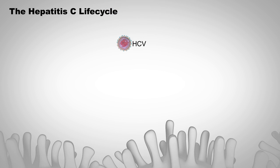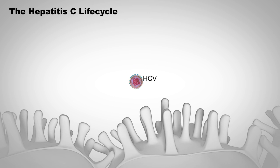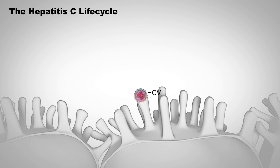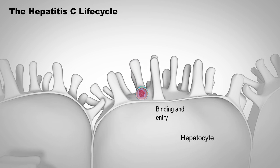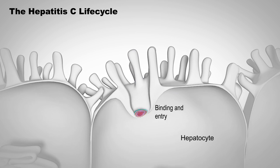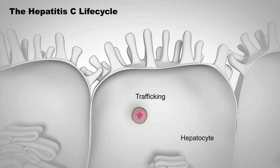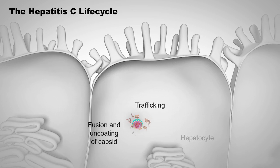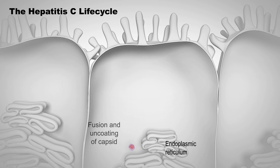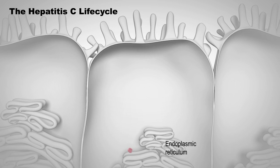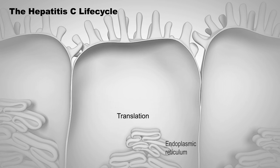HCV is a linear single-stranded RNA virus whose genome encodes a single polyprotein of 3,000 amino acids. The protein is then processed by both host and viral proteases into structural proteins and non-structural proteins that assist in viral replication.